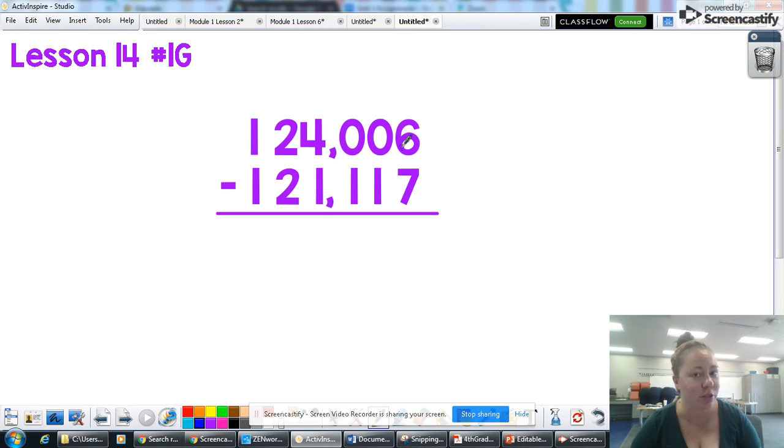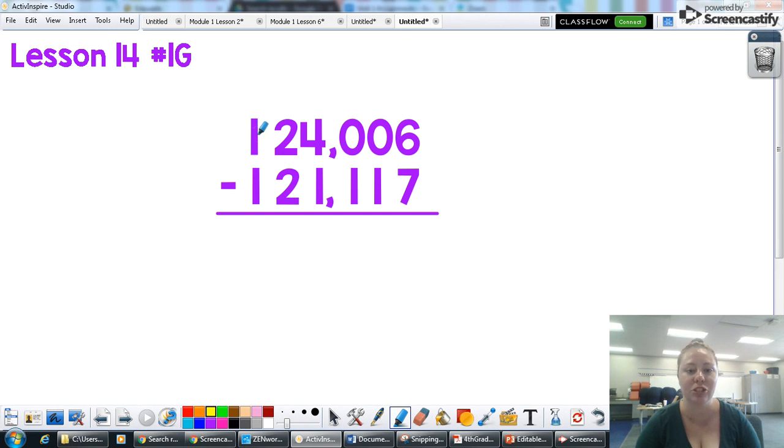So number 1G is 124,006 minus 121,117. So when you're doing a subtraction problem, you want to first check your digits. So I'm going to look across the top digits to make sure that I have enough on the top to subtract from the bottom.